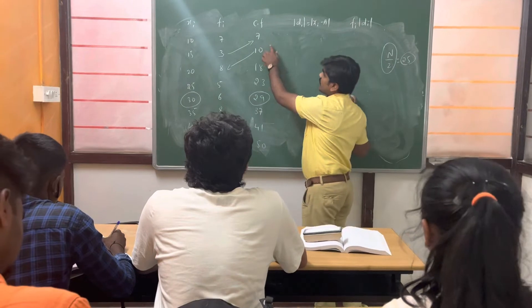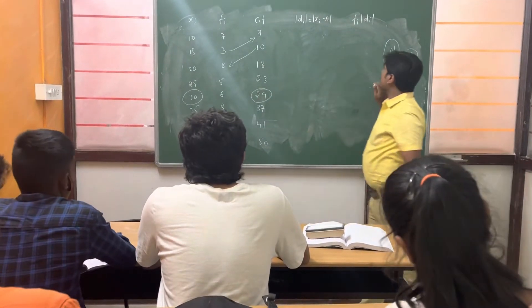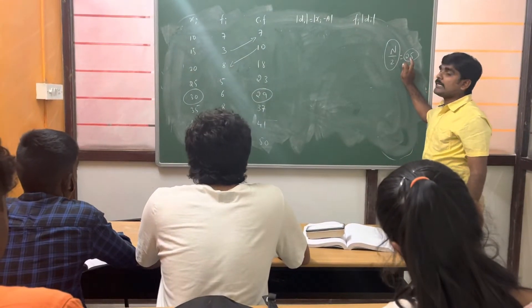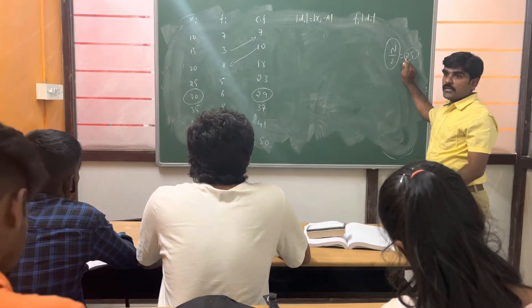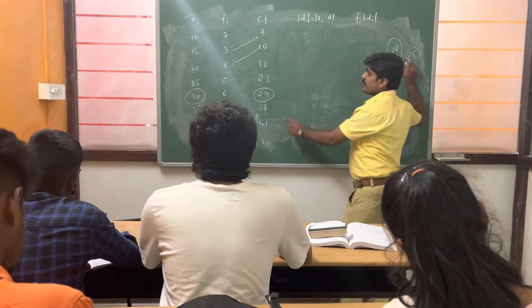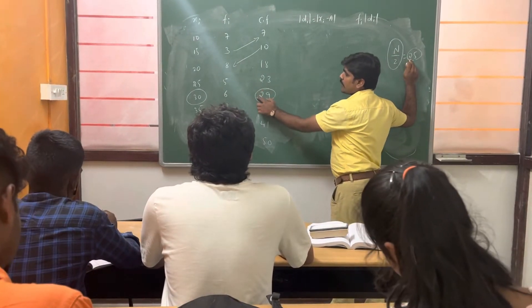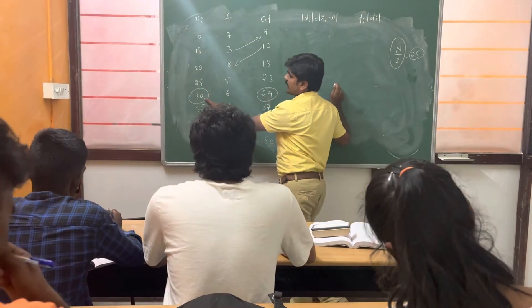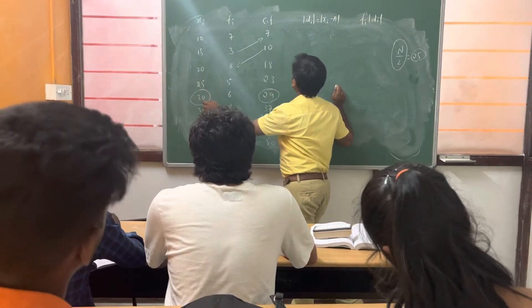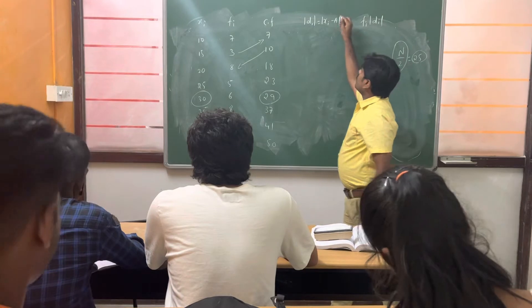Check out the cumulative frequency. What is the nearest value of 25? It should be greater than 25, it should not be less than. See, greater than 25, it is 29. Corresponding to this, what is the data they have given? 30. And this is what our A, and find out this result.